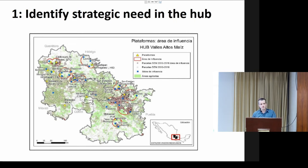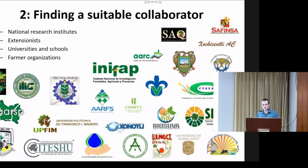The next and most important step is to find a suitable collaborator. Most platforms are not run by CIMIT — they are run by national research institutes like INIFOP, by extensionists, by universities, schools, or even by farmers' organizations that want to improve their local production system.